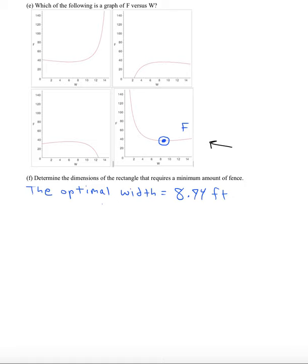The optimal width is 8.94 feet. We had this formula from the past. So if we plug in the 8.94, we get 17.89 feet for the length.